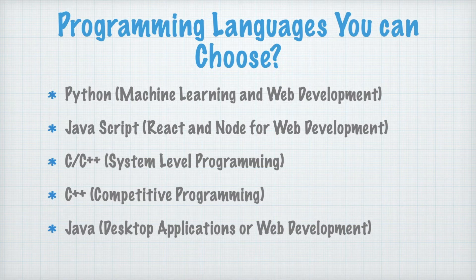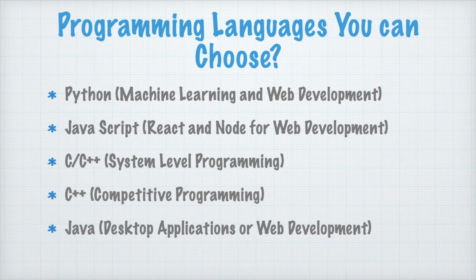You can also work with C or C++ to get an understanding of system-level programming — all browsers and operating systems are written in C or C++. C++ is also the language most used in competitive programming. Other than this, you can use Java, which is used for desktop applications or web development. All these programming languages are very important these days and you can use them to work on projects.